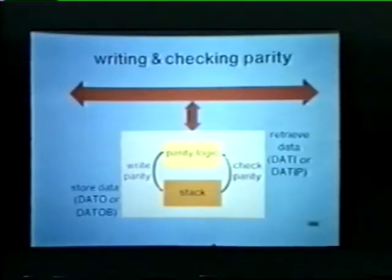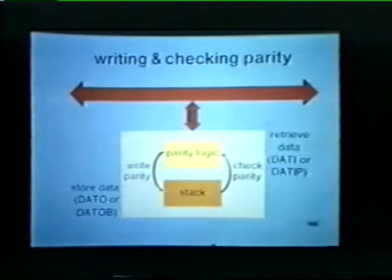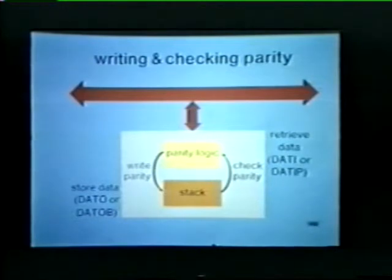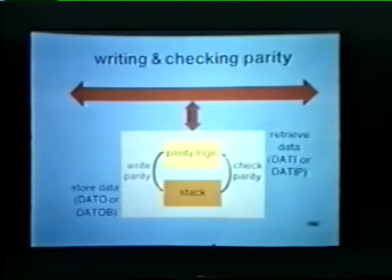The parity bits are generated when data is stored or written into memory — remember, to store data we must execute either a data O or a data OB transfer. When the data is retrieved by way of a data I or data IP operation, the parity is checked by the memory unit. The master device can then be notified if a parity error is detected. That completes our discussion of core memories.